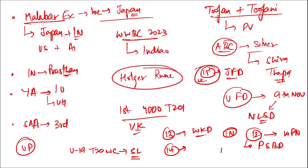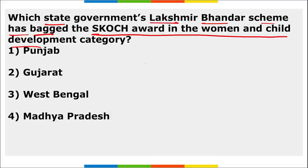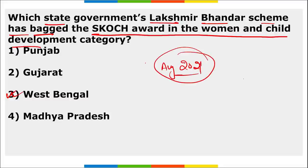Which state government's Lakshmir Bhandar scheme won the SKOCH Award in the Women and Child Development category? It is West Bengal. West Bengal's Lakshmir Bhandar scheme won the SKOCH Award — a recognition for the government and nearly two crore women of the state empowered by this scheme. The scheme was launched by the West Bengal government in August 2021 to provide financial support to women heads of household in the age group of 25 to 60 years.